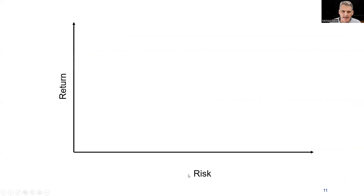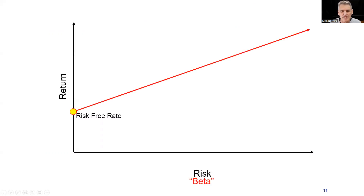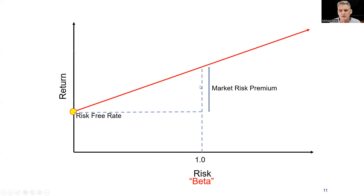We know that it's possible to get a return without taking any risk — you can invest your money into government bonds, and most governments don't default. So we start by saying there is a positive return available from risk-free assets. But if you're going to take on risk, then you should get a higher return. If you measure risk in a particular way — and we call that beta — then you get a straight-line relationship, which is really nice because we can put a bit of algebra into this.